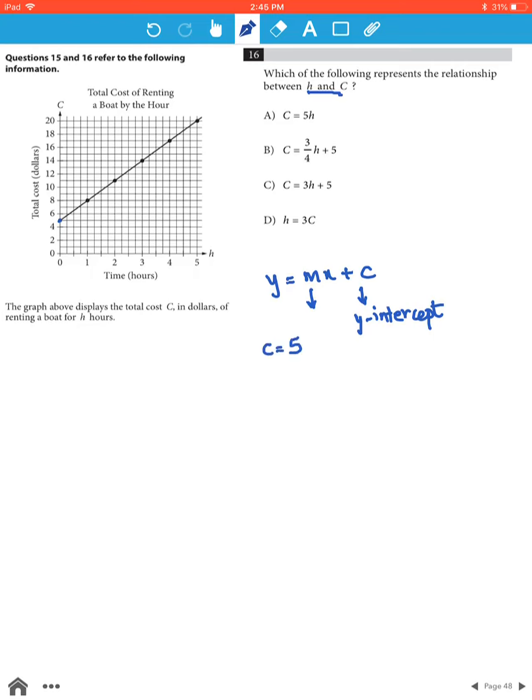Now we need to find the slope of the line. We know one point on the line is (0,5) and we take another point on the line as (1,8).